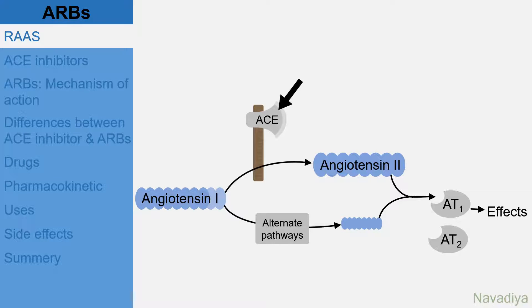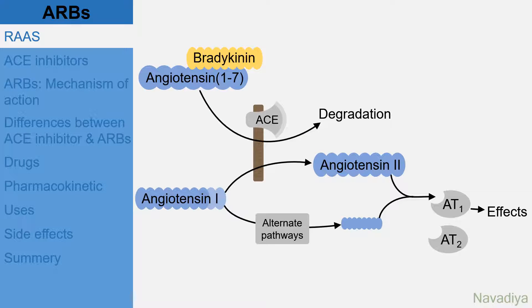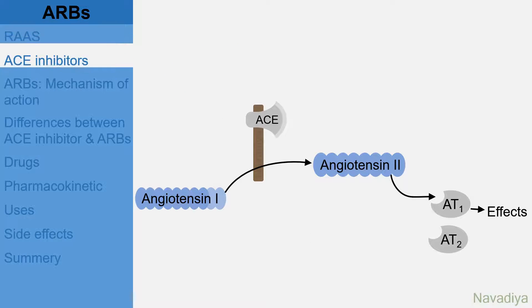Now let's go back to ACE. Apart from synthesis of angiotensin 2, it is also involved in degradation of bradykinin and angiotensin 1-7. So this was some basic background on the renin angiotensin aldosterone system.